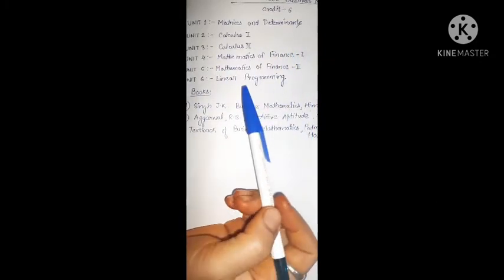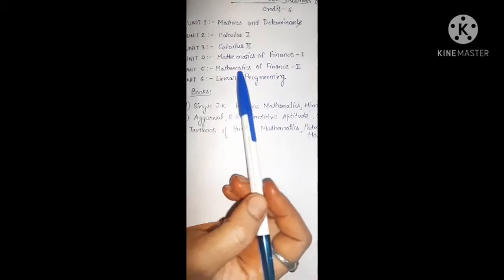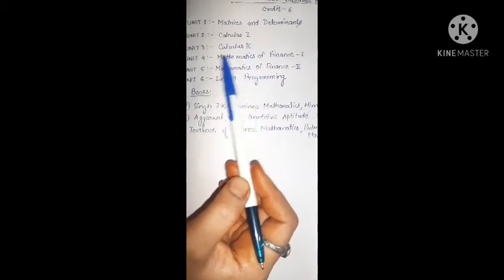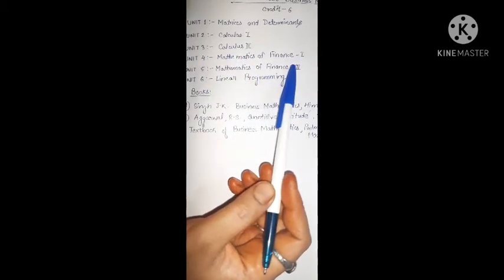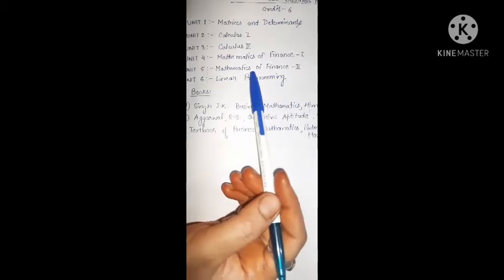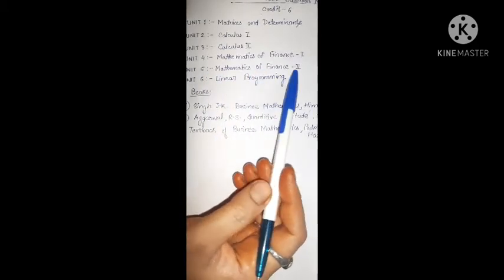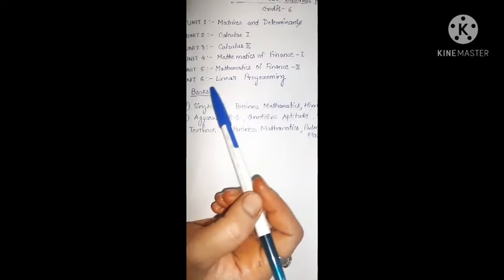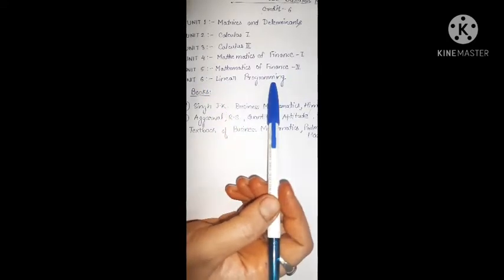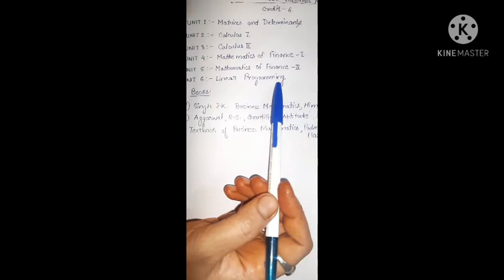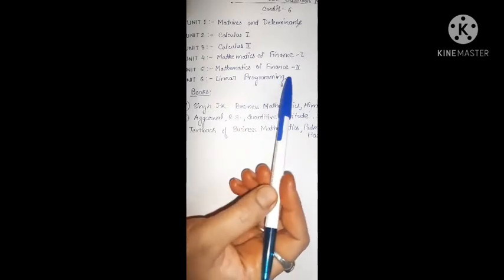Business Mathematics means we apply the topics of mathematics in business, how we use these topics in business, how they are helpful for us in business. Then Unit 4 is Mathematics of Finance. Here some profit, loss, these are the topics. Next, Mathematics of Finance part 2. And lastly it is Linear Programming.